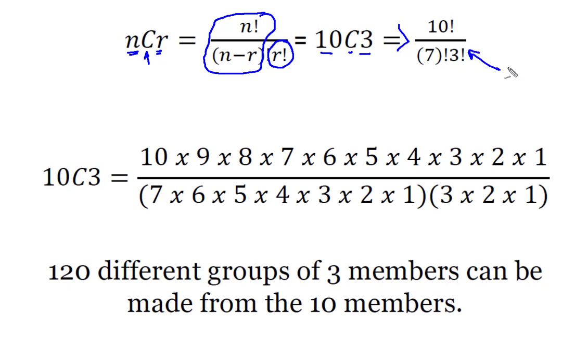Note, what this is not is this is not 7 factorial times 3 factorial. This is not equal to 21 factorial. A lot of students make that mistake. Instead, I take my 10 factorial up here on the top. Here's my 7 factorial, and here's my 3 factorial. I'm going to start crossing out stuff that cancels out.